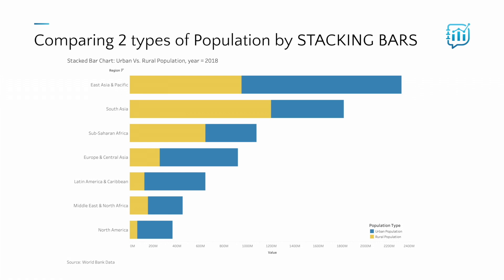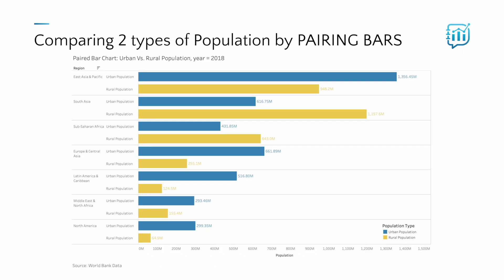But quick — which region has the second highest urban population? Instead of stacking them as segments of a single bar, we can separate them in pairs like this, allowing us to quickly see exactly which region had the second highest urban population: Europe and Central Asia — it has the second largest bar. And this is a paired bar chart.